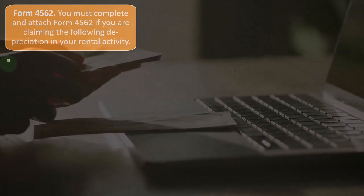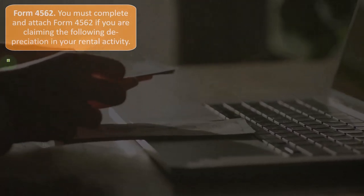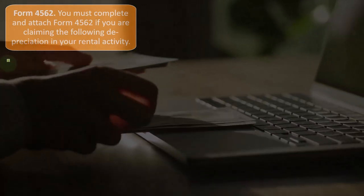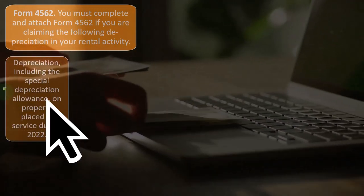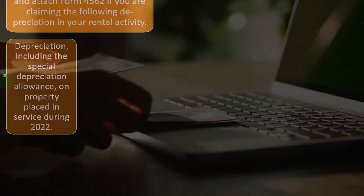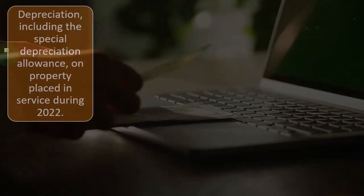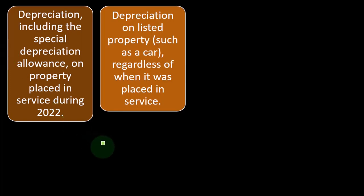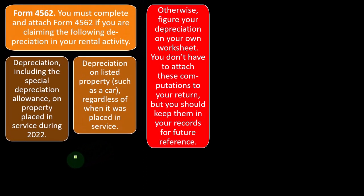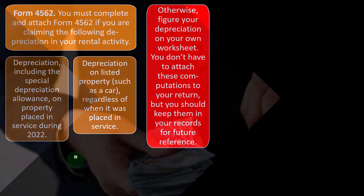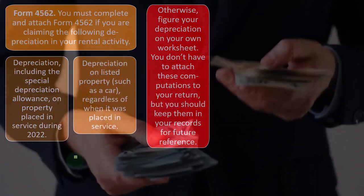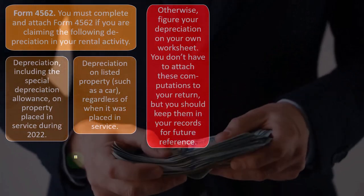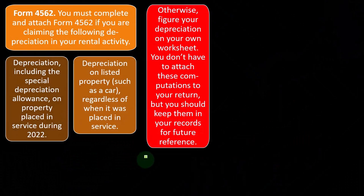Form 4562: who must complete and attach it? You must attach Form 4562 if you are claiming depreciation in your rental activity, including the special depreciation allowance on property placed in service during 2022, or depreciation on listed property such as a car regardless of when it was placed in service. Otherwise, figure your depreciation on your own worksheet — you don't have to attach these computations to your return, but keep them in your records. Those depreciation schedules do become important and are usually generated with the help of tax software.